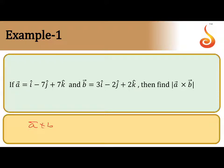We have the formula for a bar cross b bar which is i cap, j cap, k cap in the first row, then a1, b1, c1 in the second row, and a2, b2, c2 in the third row.